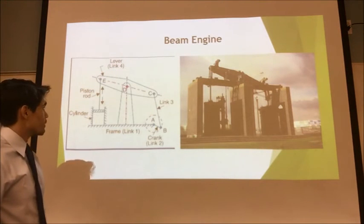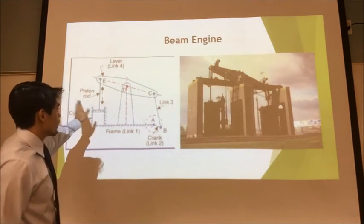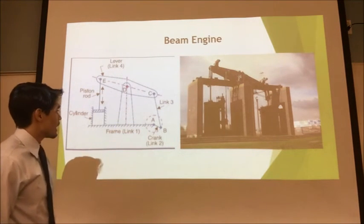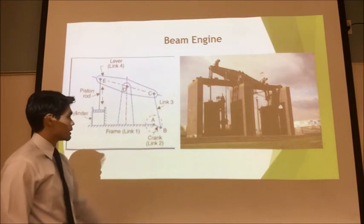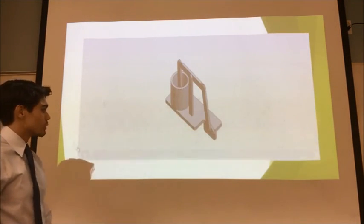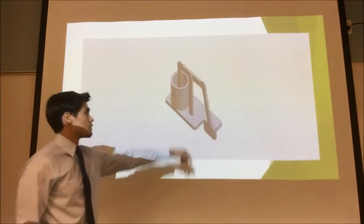Here's a schematic of a beam engine. As you can see, the piston moves up and down. This will move motion to the other side of the beam and rotate this crank 360. Here's a short video of the beam engine. As you can see, it rotates 360.